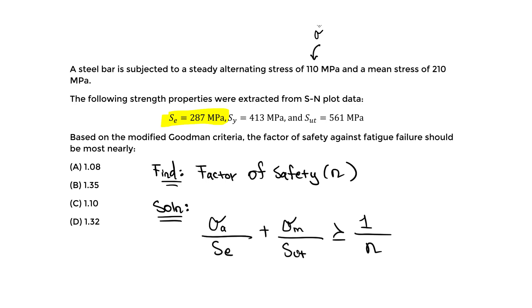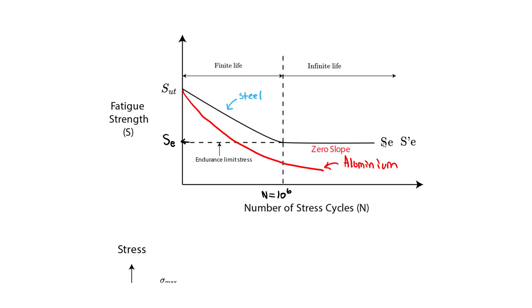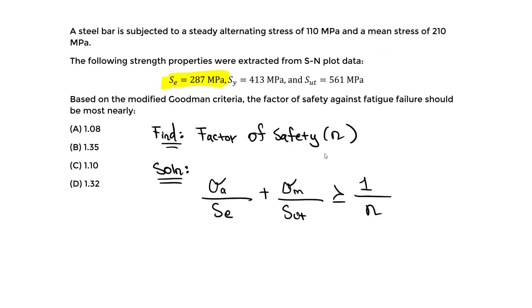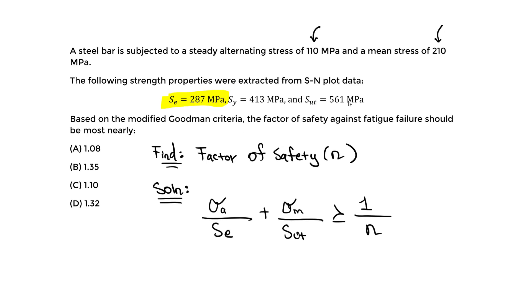The N is what we're looking for. All we have to do is plug and chug. This alternating stress is sigma_a, so it's 110. The mean stress is 210, so this is sigma_m. The SE is 287 - this is the endurance limit. Sometimes it's S_prime_e, the modified endurance limit, but we're going to just denote it by SE. S_ultimate is going to be 561.